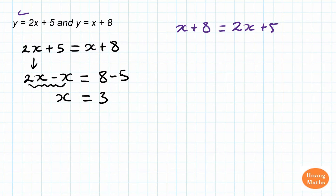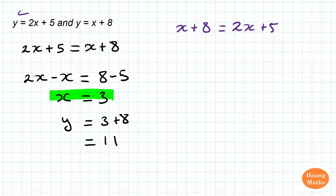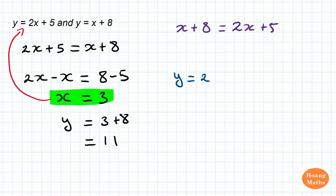Now we need to find the y value. Since x is equal to 3, I can substitute this x value — 3 — into either equation. So y is equal to 3 plus 8, which is equal to 11. Or I can substitute x equals 3 into the other equation: y is equal to 2 times 3 plus 5, which is 6 plus 5, which is 11. See? That's the same.